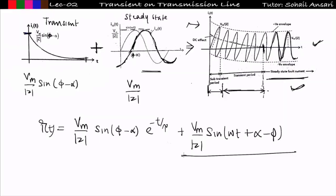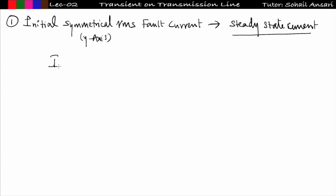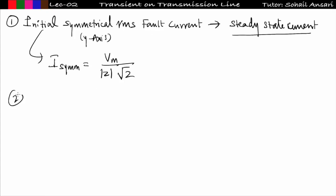Now, the types of questions asked from this concept: the first is the initial symmetrical RMS fault current. 'Initial symmetrical' means the waveform is symmetrical along the y-axis, which only occurs at steady state — so this is simply the steady state RMS current. Its value is: I_sym = (V_m/|Z|) / √2. The name has changed but it is just the steady state RMS current.